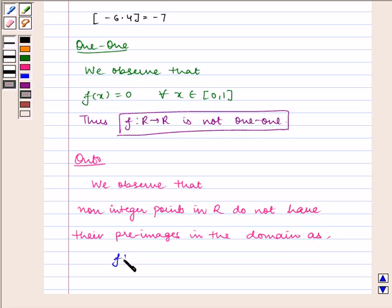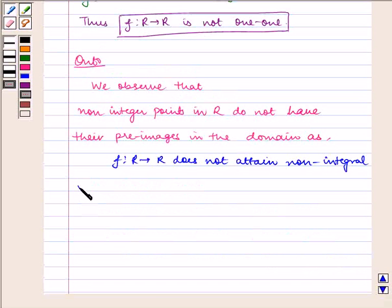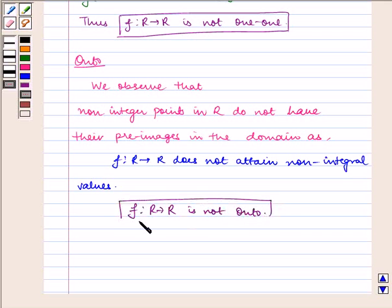f: R → R does not attain non-integral values. Hence, f: R → R is not onto. I hope you understood this problem. Bye and have a nice day.